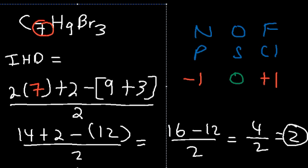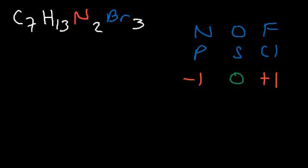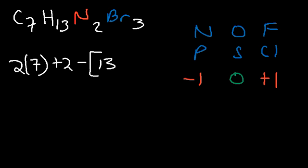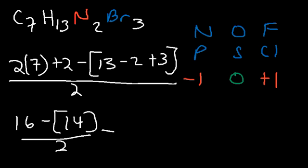Let's try another example: C7H13N2Br3. Using the formula: (2×7 + 2 − (13 − 2 + 3)) / 2. We have 2 nitrogen atoms so we subtract 2 from the hydrogen count, and 3 bromine atoms so we add 3. 2×7 = 14, plus 2 = 16. 13 minus 2 is 11, plus 3 is 14. 16 minus 14 = 2. 2 divided by 2 = 1. So the IHD value is 1.